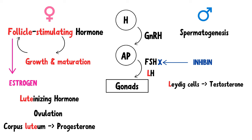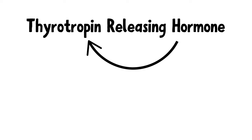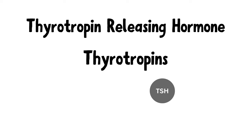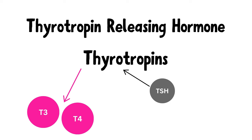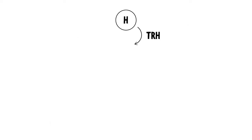Now let's move on to TRH, also known as thyrotropin-releasing hormone — a hormone that releases thyrotropins. Thyrotropins are hormones like TSH that stimulate the thyroid gland to produce hormones like T3 and T4. TRH is synthesized in the hypothalamus and stimulates the anterior pituitary gland to release thyroid-stimulating hormone.